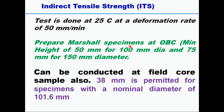For conducting the indirect tensile strength test, prepare Marshall specimens at optimum binder content with a minimum height of 50 mm for 100 mm diameter and 75 mm for 150 mm diameter, meaning the diameter-to-height ratio should be 1 to 2. This test can also be conducted on field core samples, and in that case the minimum sample height should be 38 mm for a nominal diameter of 101.6 mm.